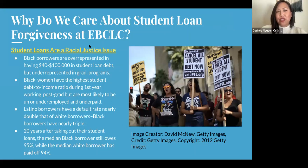So why do we care about student loan forgiveness at EBCLC? Simply put, student loans are a racial justice issue. Black borrowers are overrepresented in having $40,000 to $100,000 in student loan debt, but underrepresented in graduate programs. Black women have the highest student loan debt to income ratio during their first year working postgraduate, but are most likely to be un or underemployed and underpaid. Latino borrowers have a default rate nearly double that of white borrowers, while black borrowers have nearly triple. 20 years after taking out their student loans, the median black borrower still owes 95%, while the median white borrower has paid off 94%.